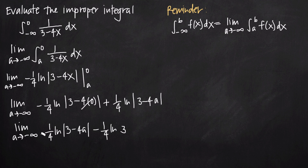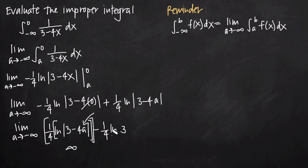Now we evaluate the limit as a approaches negative infinity, plugging negative infinity in for a. We get negative infinity times negative 4, and those negatives cancel, giving positive infinity. So we have 3 plus positive infinity inside the natural log, which is just positive infinity. As larger and larger values are plugged into the natural log, it grows larger and larger. Even dividing by 4, the numerator keeps growing, so the whole expression tends toward infinity. The constant one-fourth times natural log of 3 is negligible — we essentially have infinity minus a small constant, which is still infinity.